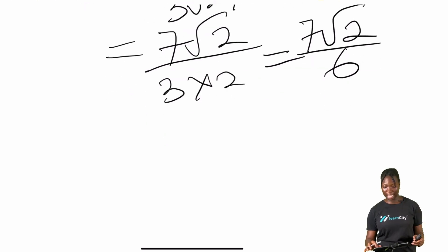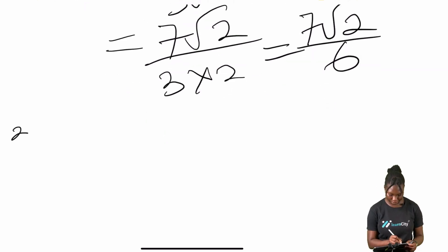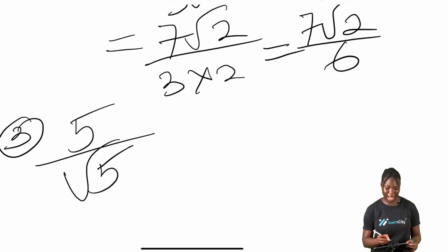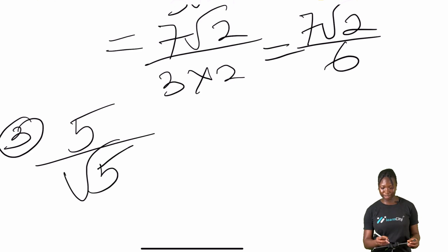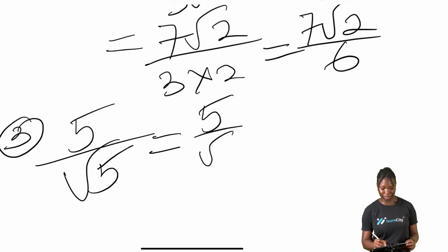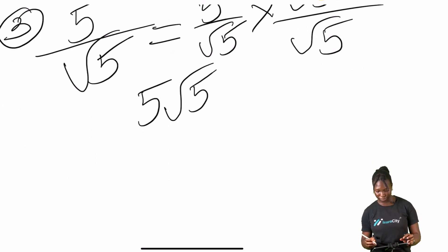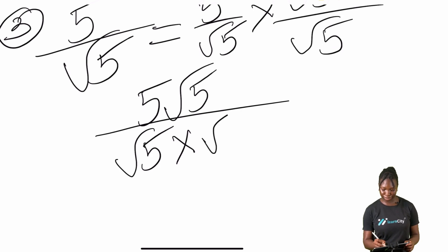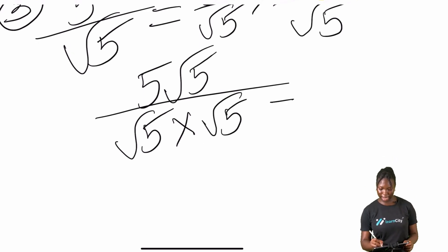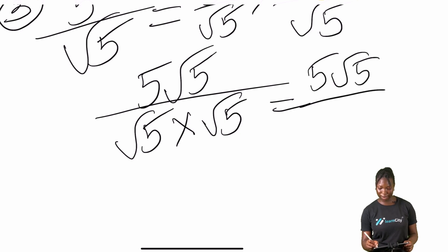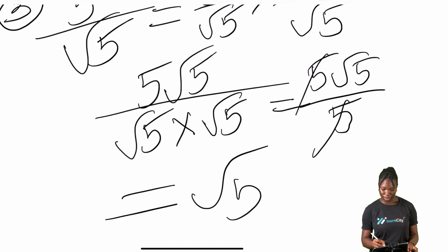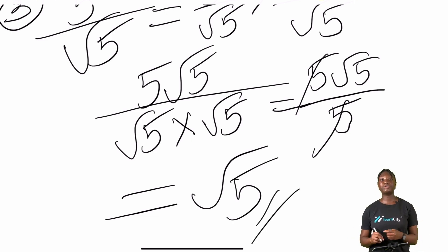Moving to the third example, we have five over root five. Rationalizing: five over root five times root five over root five gives five root five over five, which simplifies to root five. So our answer is root five. And that is all on division of surds through rationalization.